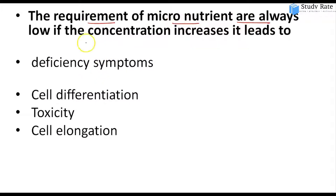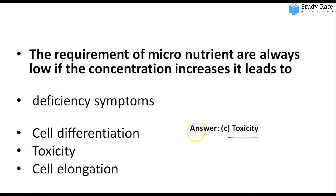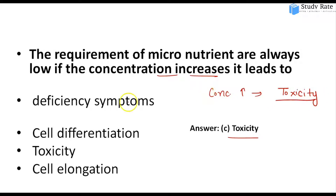Third question: The requirement of a micronutrient is always low. If the concentration increases, what happens? Options: deficiency symptoms, cell differentiation, toxicity, or cell elongation. The answer is toxicity. If any substance's concentration increases beyond requirement, that substance becomes toxic, causing toxicity, which also reduces the uptake of essential micronutrients.